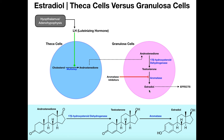For example, the maturation of the follicle — folliculogenesis and oogenesis — is partly dependent on estradiol, so some of that estradiol will remain around the granulosa cells where that process is taking place. But estradiol will also go elsewhere in the body and exert functions there, like in the breast tissue for breast development. So estradiol can either travel far away to exert systemic effects or act locally around the granulosa cells where folliculogenesis and oogenesis are occurring.